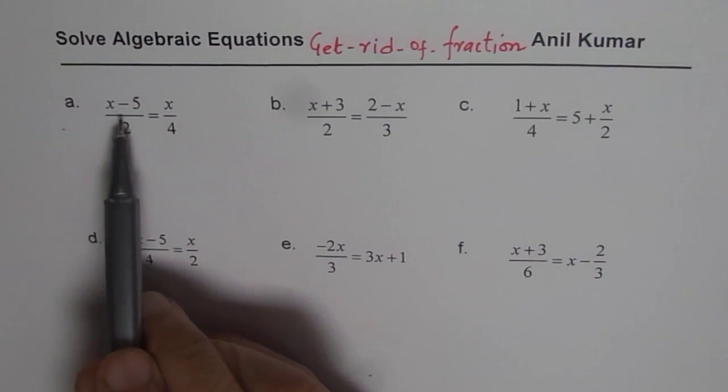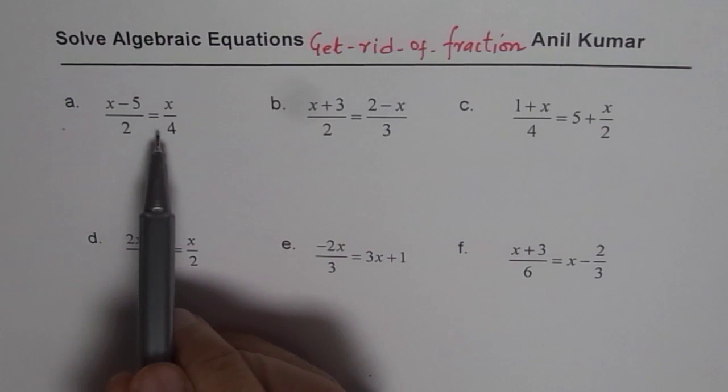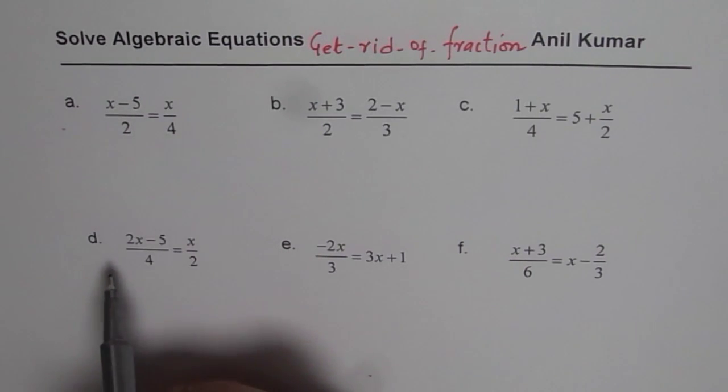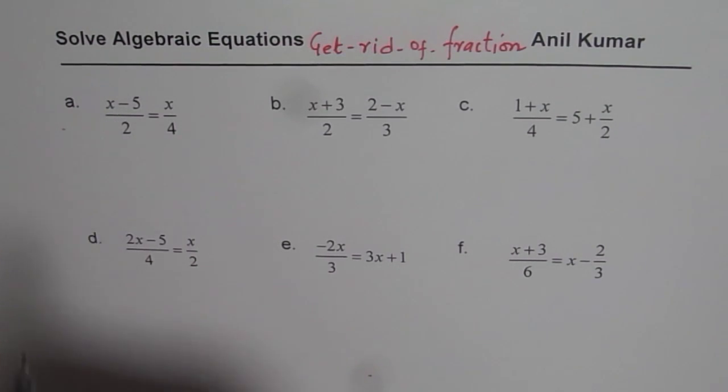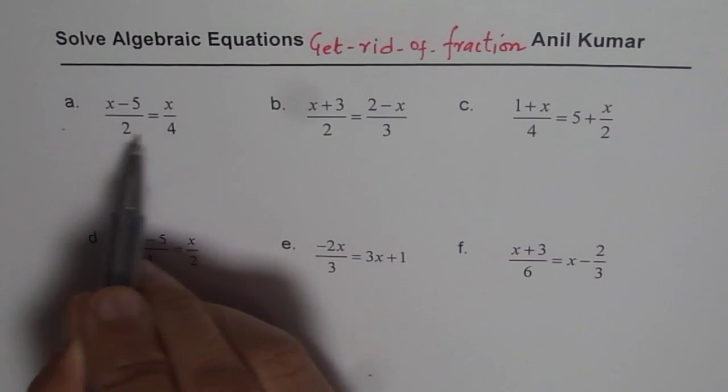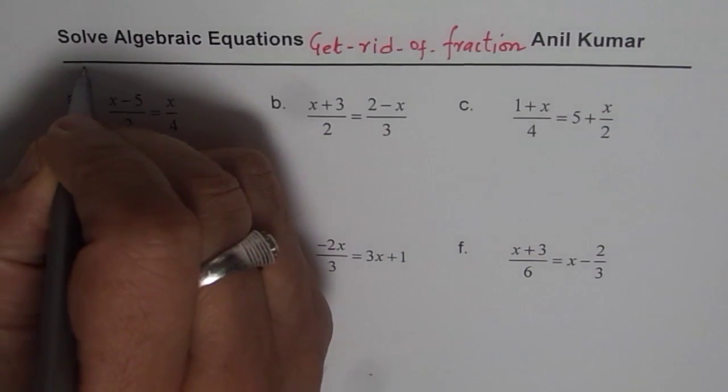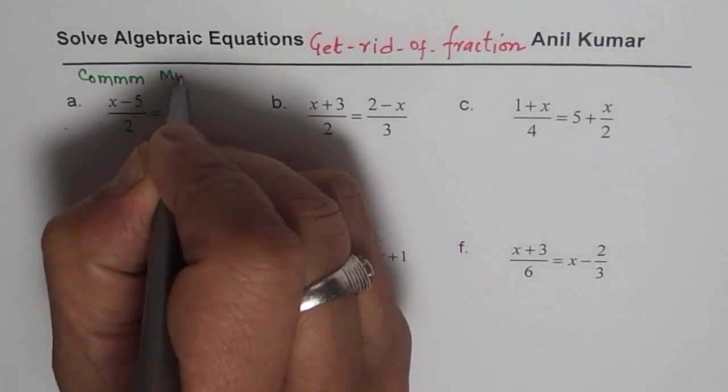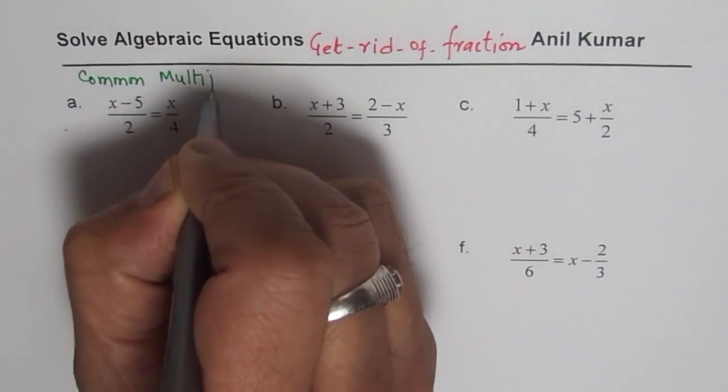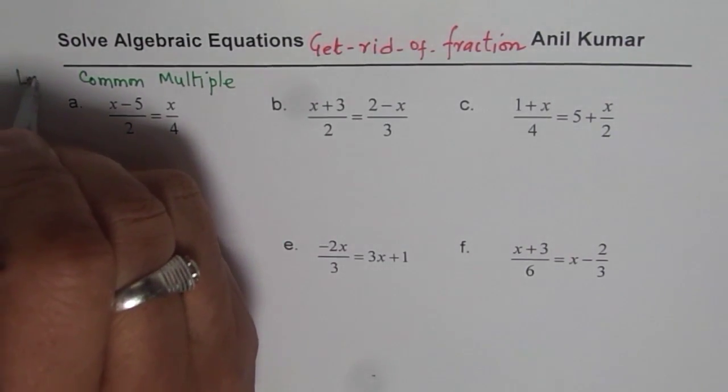Let's go through them one by one. The very first one is x minus 5 divided by 2 equals to x over 4. Now how can I get rid of the fraction part which is 2 and 4? Well the common multiple is what? So let's find the common multiple. So common multiple is what we are looking for.